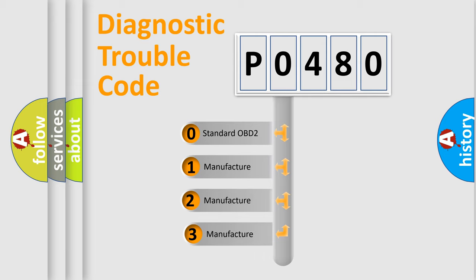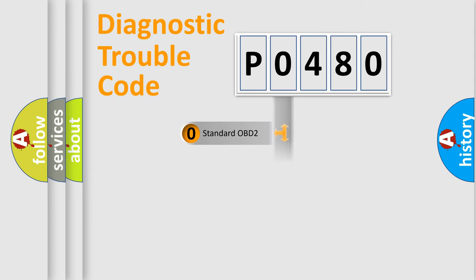If the second character is expressed as zero, it is a standardized error. In the case of numbers 1, 2, 3, it is a more prestigious expression of the car-specific error.